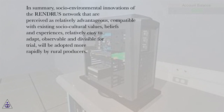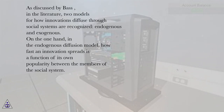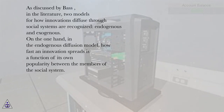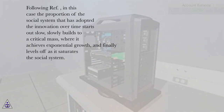In summary, socio-environmental innovations of the Rindris network that are perceived as relatively advantageous, compatible with existing socio-cultural values, beliefs and experiences, relatively easy to adapt, observable, and divisible for trial will be adopted more rapidly by rural producers. As discussed by Bayes, two models for how innovations diffuse through social systems are recognized: endogenous and exogenous. In the endogenous diffusion model, how fast an innovation spreads is a function of its own popularity among members of the social system. Following Ruff, the proportion of the social system that has adopted the innovation starts out slow, slowly builds to a critical mass achieving exponential growth, and finally levels off as it saturates the social system.